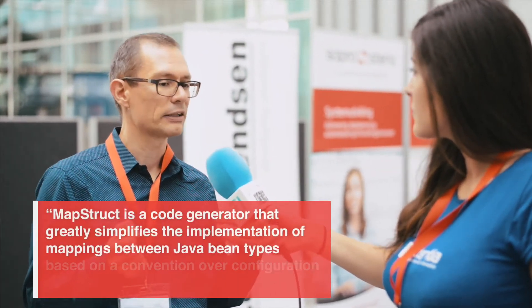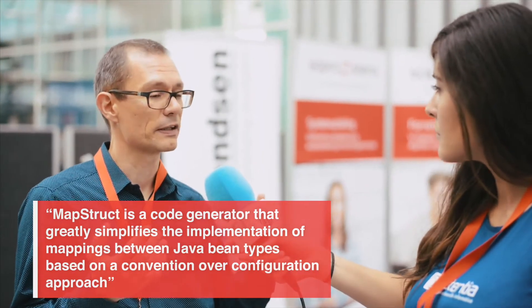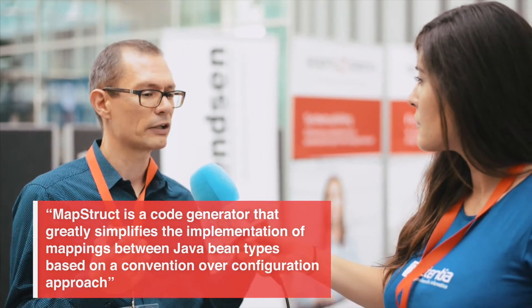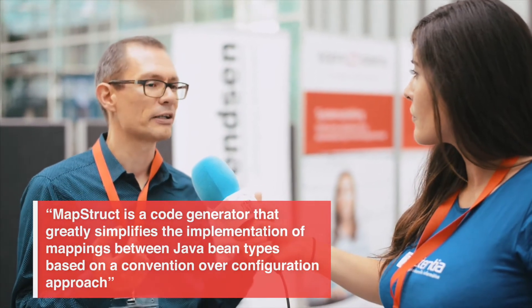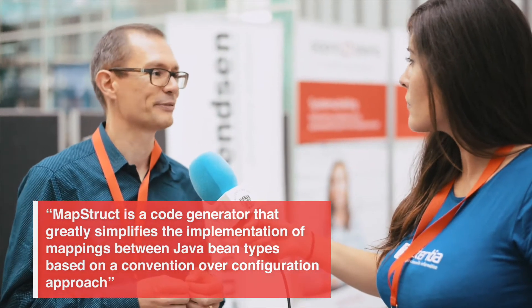If we are going to write some microservices, we have several layers in our application, like the domain model, and we don't want to expose that to other services. We need a different domain model and a transport model, and we have to copy data between these. This is a quite tedious task to write all the code by hand, and MapStruct can generate this copying code for us.